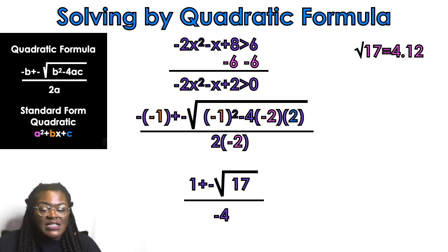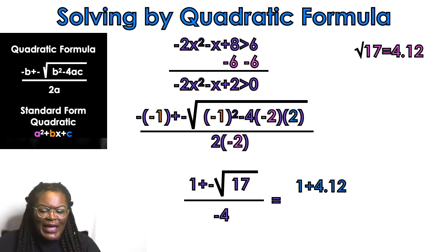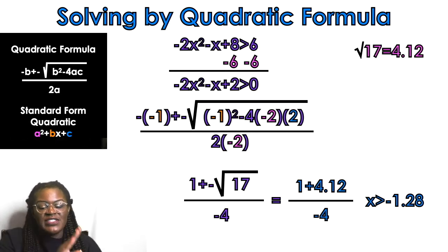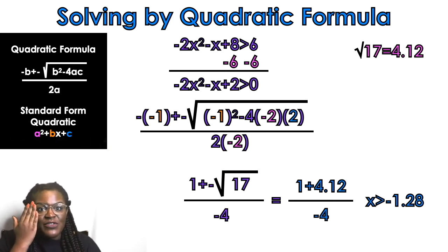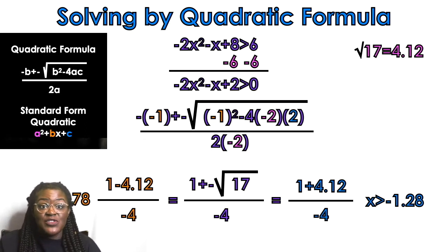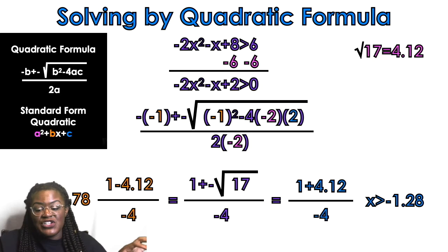So approximately 4.12. We do 1 plus 4.12 over negative 4, which gives us approximately negative 1.28, so x is greater than negative 1.28. On the other side, we do 1 minus 4.12 over negative 4, and that gives us x is greater than 0.78.